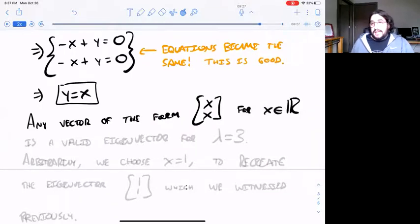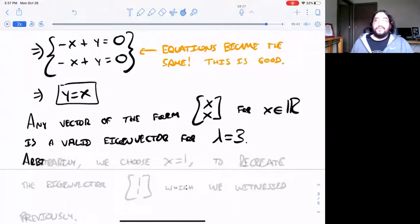Now here notice we get the equation y equals x. Well just plug in x for y in the vector xy, the unknown, and we get (x, x). So we have infinitely many eigenvectors. For example, (2,2), (-pi, -pi), these are all valid eigenvectors for lambda equals three.